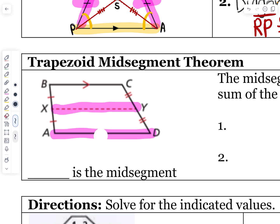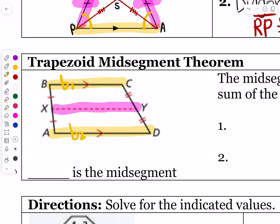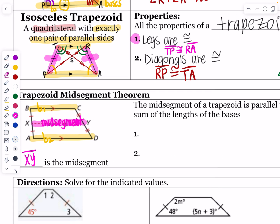If I add together my two bases — B1 and B2 — and divide by 2, that gives me the length of the mid-segment. For example, if base 1 is 10 and base 2 is 20, the mid-segment is the average: 10 plus 20 is 30, divided by 2 gives 15. With simpler numbers like 6 and 8, the mid-segment is immediately 7.